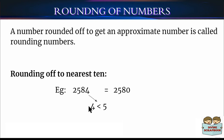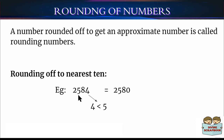Suppose we have 2,584 and we need to round it off to the nearest 10. We compare the digit in the 1's place with 5. If it is less than 5, we replace the 1's place digit with 0. Here, 2,584 has 4 in its 1's place and 4 is less than 5, so we replace it by 0. After rounding off to the nearest 10, it becomes 2,580.